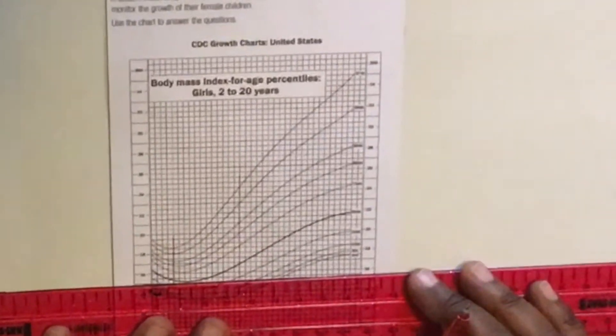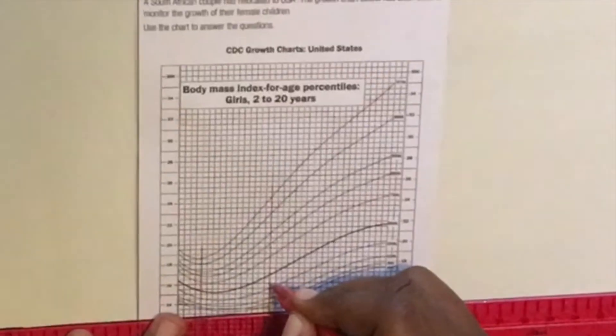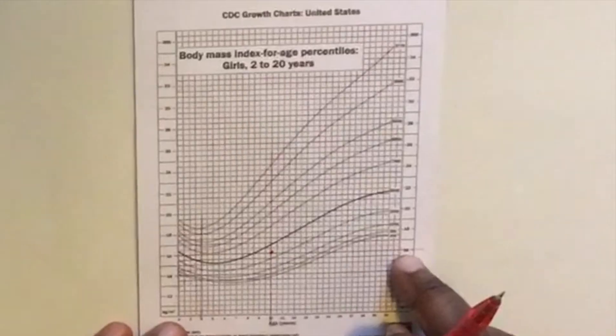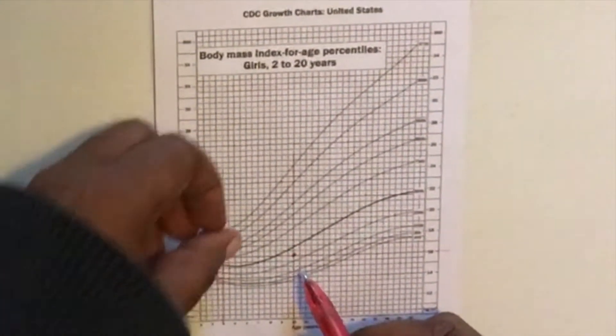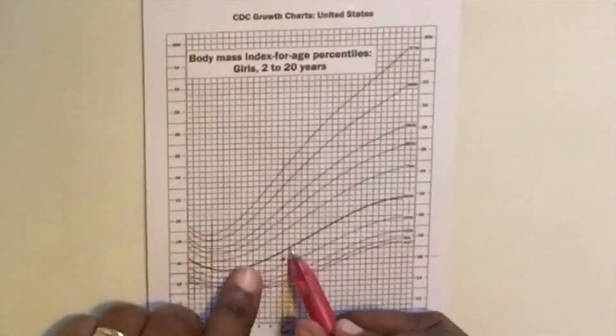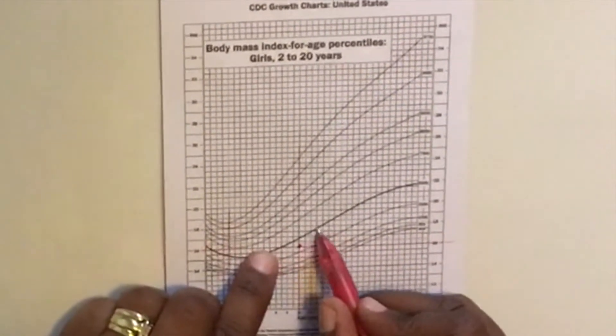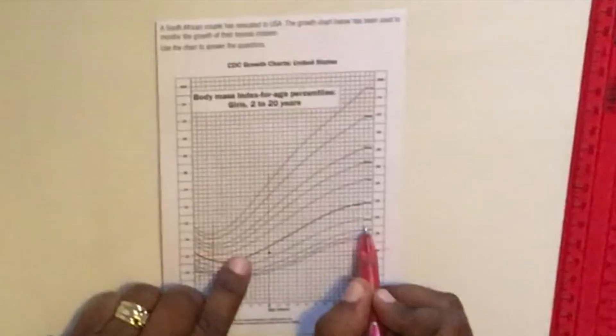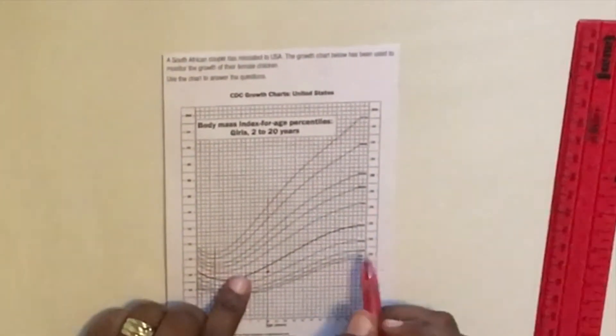And then they've given us her body mass index. They've said the body mass index is 16 kilogram per meter squared. When we go to the side, we find the 16 is here. Now this point here, that's where the age 10 years and the 16 for body mass index meet. It's between which two percentiles? It's between that line, this one, and that one. So you go along and look at the answer. At the end, it's the 50th percentile and the 25th percentile. That's your answer.